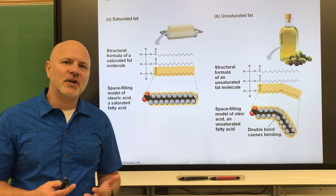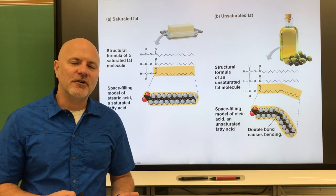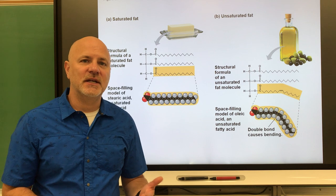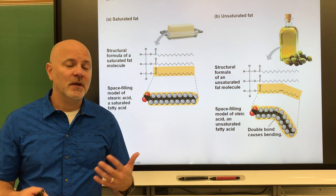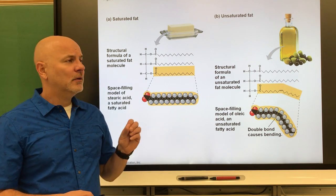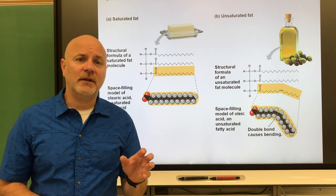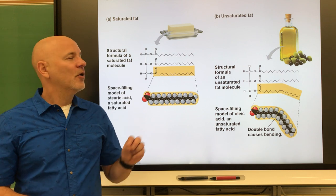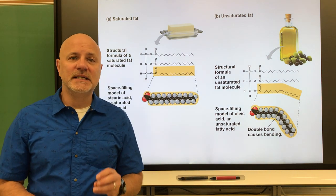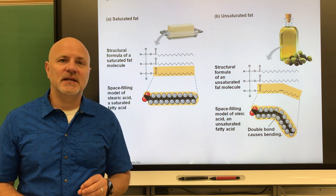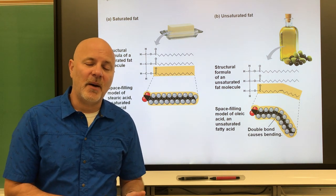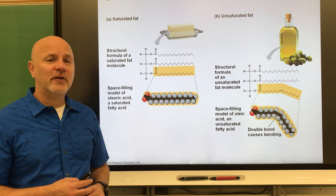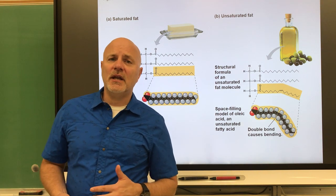One gram of carbohydrate stores four calories of energy — a calorie being the amount of energy needed to raise one gram of water one degree Celsius. One gram of a lipid stores nine calories. This means you can store more than twice the amount of energy in the same amount of space, which is why we use fats for long-term energy storage.